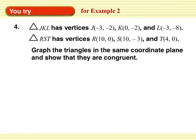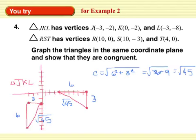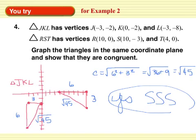Okay, you try. JKL has those vertices, RST has those vertices. Graph the triangles in the same coordinate plane and show that they are congruent. I'm going to push pause and do a rough sketch. There we go. Looks good to me. We have all the same sides. So yes, because of side, side, side. And my work is showing that they are congruent.